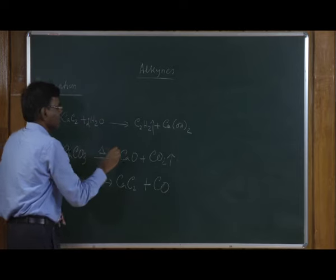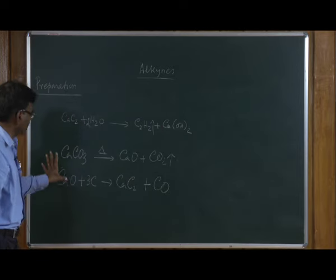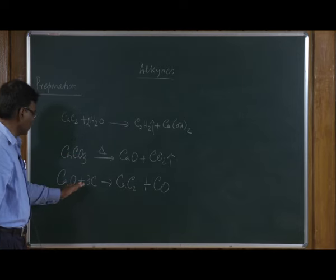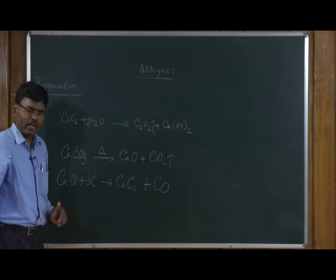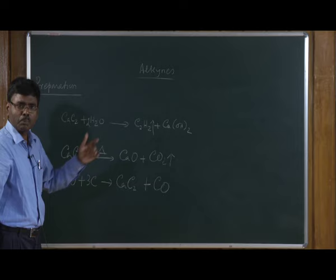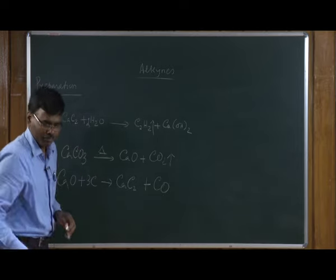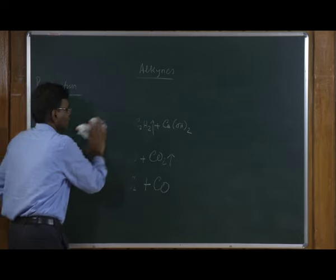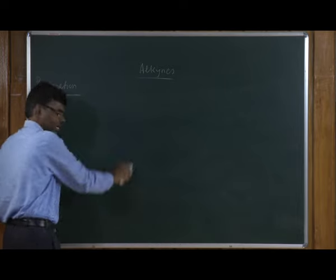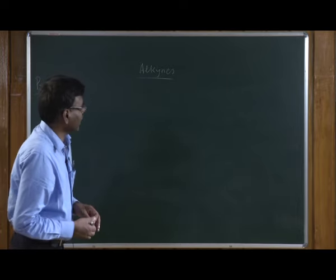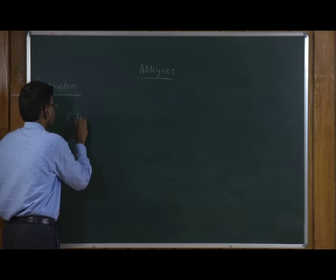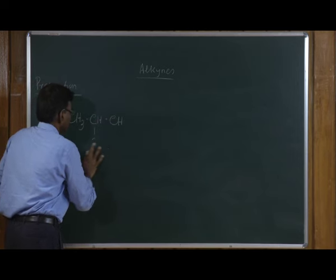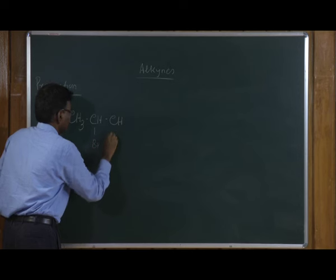The next common approach to prepare alkynes is dehydrohalogenation reactions. For example, if you have a 1,2-dibromo alkane — a vicinal dihalo compound — and treat it with alcoholic KOH, which acts as a base, the base can remove a hydrogen as a proton.